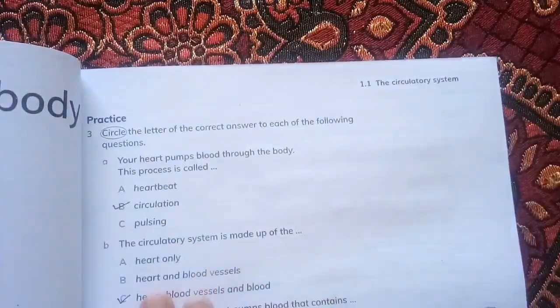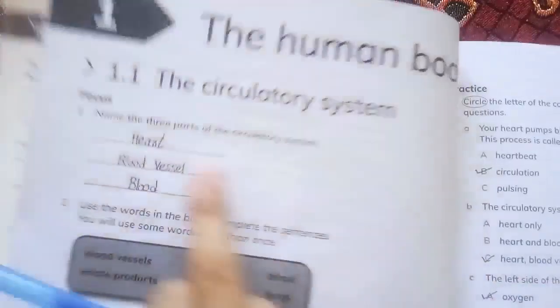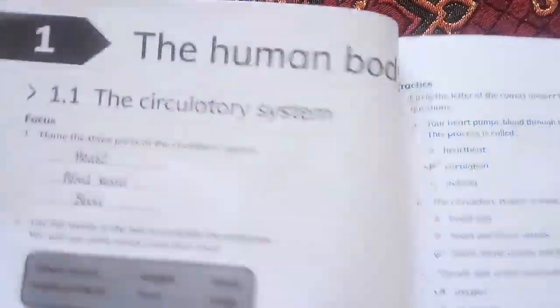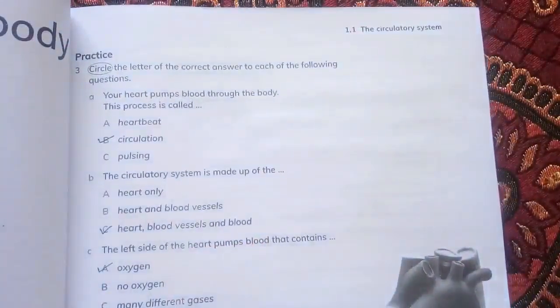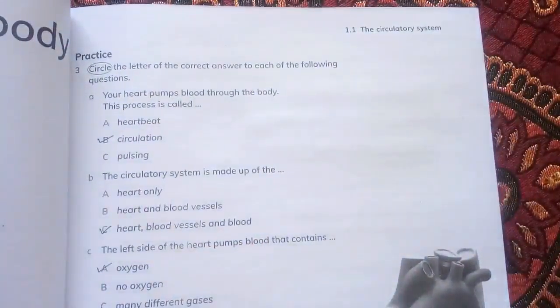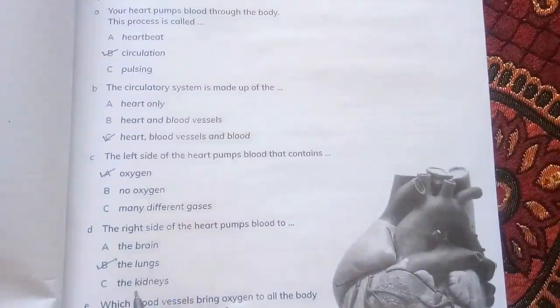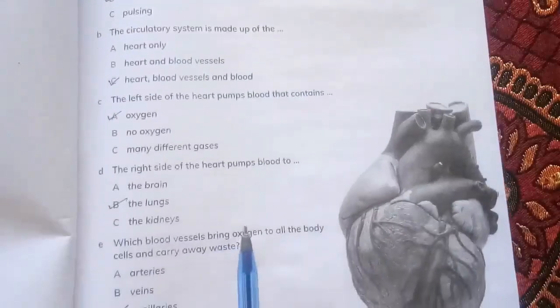The circulatory system is made up of heart, blood vessels, and blood. The left side of the heart pumps blood that contains oxygen. The right side of the heart pumps blood to the lungs.